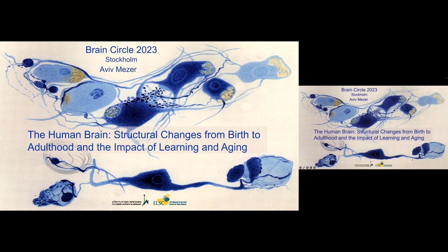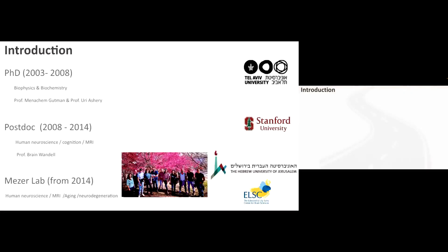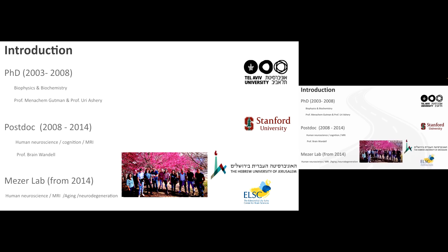Hello, it's Aviv Mezer and I'm going to try to recover the talk I did in Stockholm and record it again here because the audio in the original one wasn't working. I'm going to talk about the human brain structure changes with development, aging and true learning. I did my PhD in Tel Aviv University in the field of biophysics, then moved to Stanford and worked with Professor Wendell on human neuroscience and MRI, then opened my own lab using MRI and human neuroscience to measure aging and neurodegeneration at the Hebrew University in ELSC from 2014.